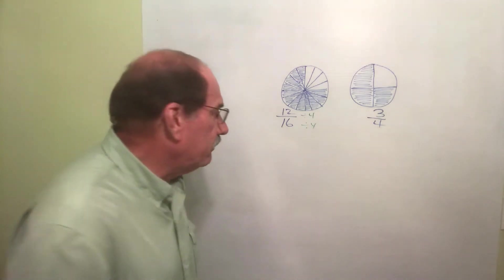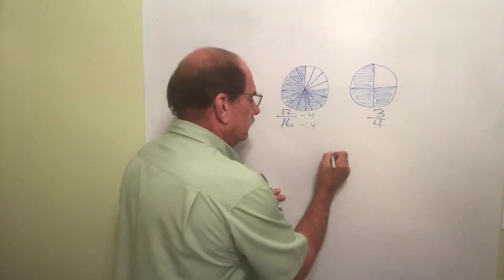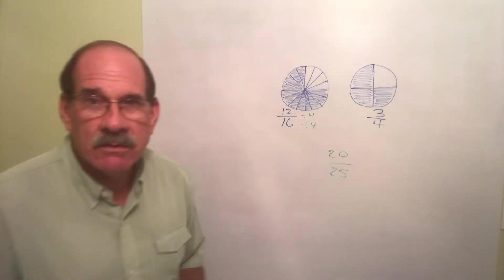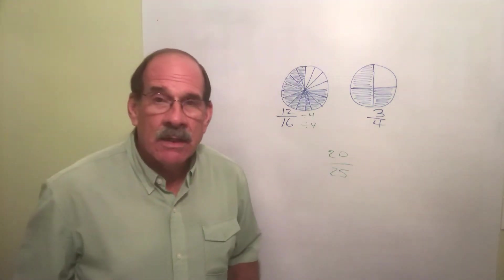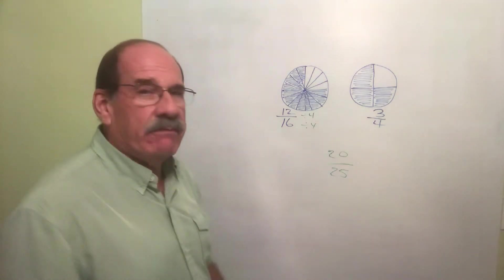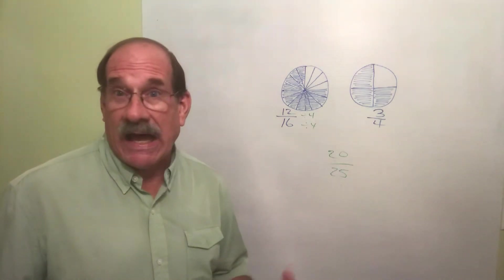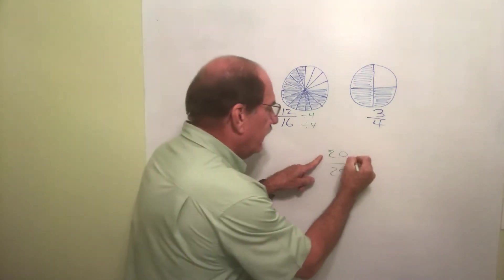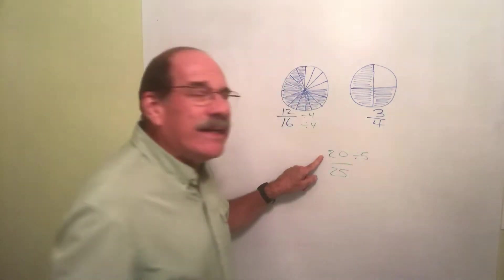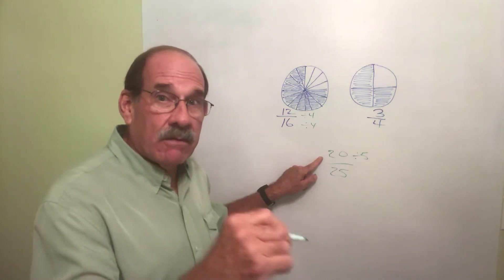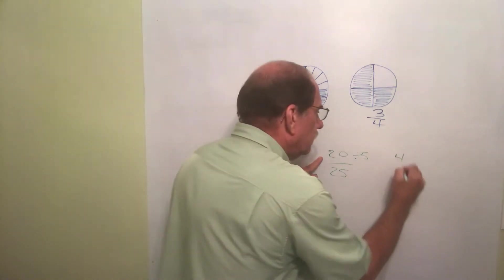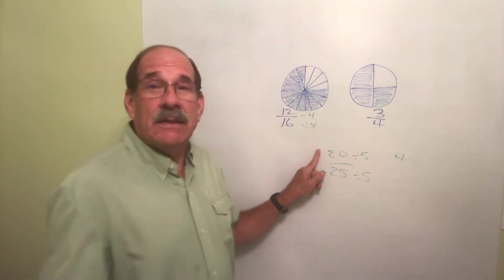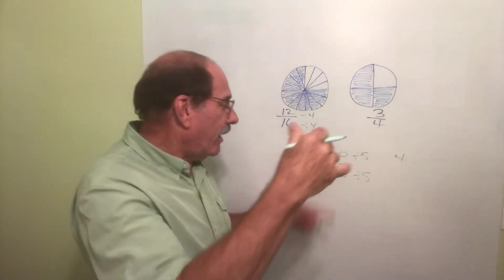What about something like 20 over 25? 20/25ths. I can reduce it. What can both those divide by? It looks like 5 is about it, right? So I divide this by 5, divide by 5. 20 divided by 5 is 4.